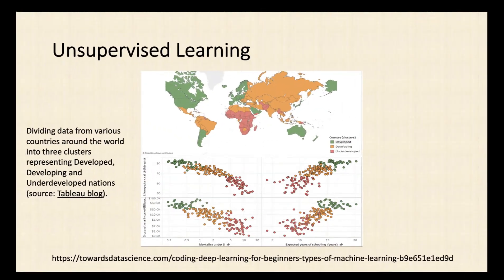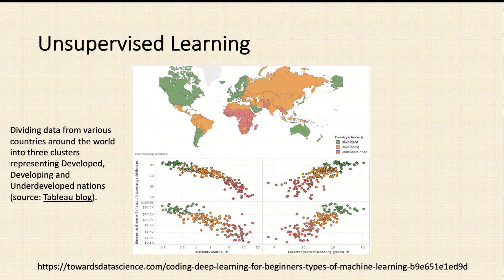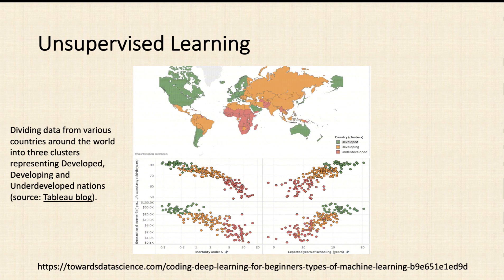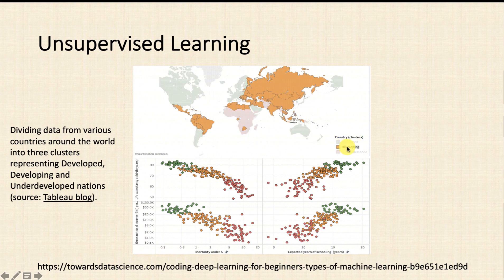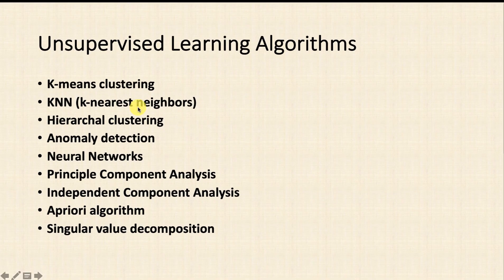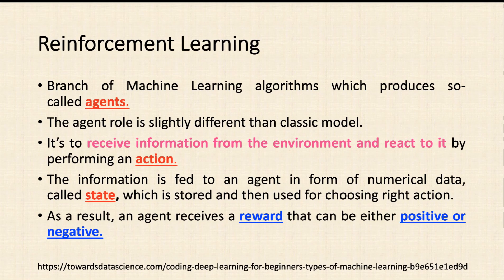Here is an unsupervised learning example: data from various countries around the world is divided into three clusters representing developed, developing, and underdeveloped nations. The green color represents developed countries, orange is developing, and pink is underdeveloped. This way you can analyze real-time data. The main unsupervised learning algorithms we will discuss later are K-means clustering, K-NN, Principal Component Analysis (PCA), and the Apriori algorithm.